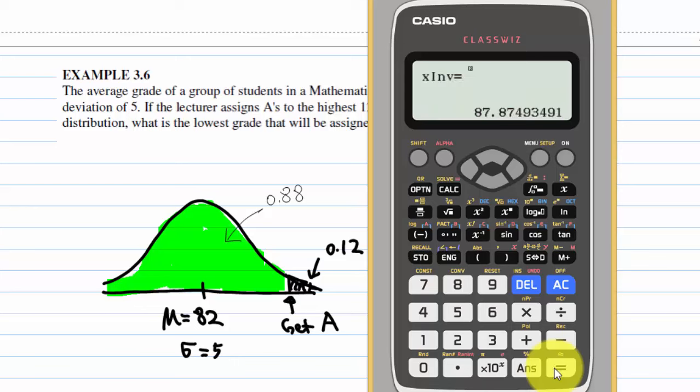Then you find that in order to get A grade, the minimum is 87.87, which is 88.